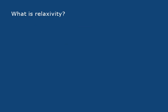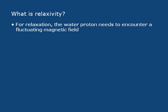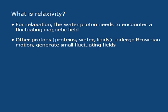So in order to get relaxation to occur, in order to change the magnetic properties of water, the proton needs to encounter some sort of fluctuating magnetic field. And the way that this happens in the absence of the contrast agent, it's usually by other protons.